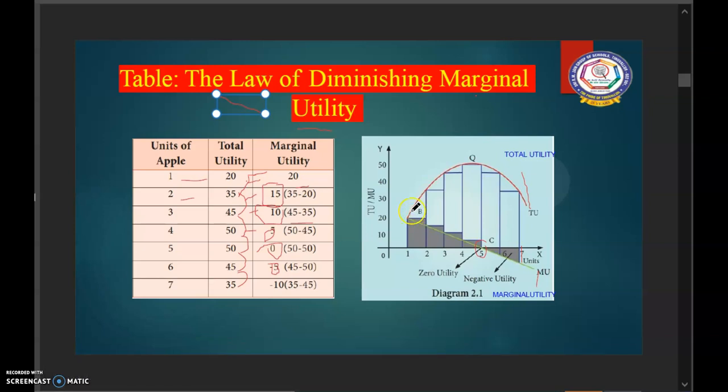Here, we find that the total utility goes on increasing, but at a diminishing rate. On the other hand, marginal utility goes on diminishing, you can see it is coming down.